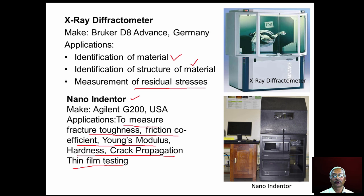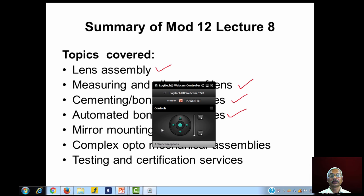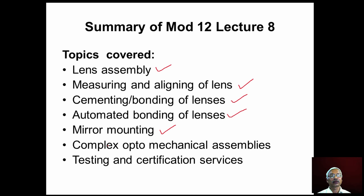In summary, module 12 lecture 8 covered lens assembly, measuring and aligning lenses in optical systems, cementing and bonding of lenses (manual and automated), mirror mounting in optomechanical systems, complex optomechanical assemblies such as lithography systems, and testing and certification services offered by organizations like Zygo and CMTI related to metrology.